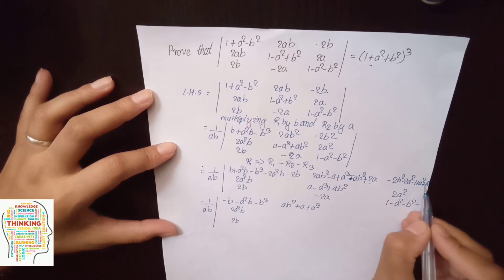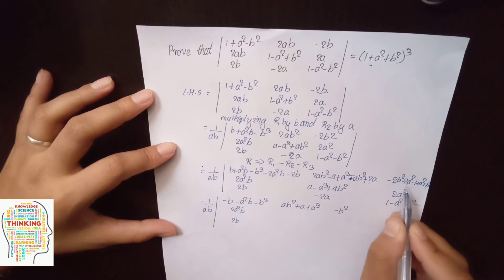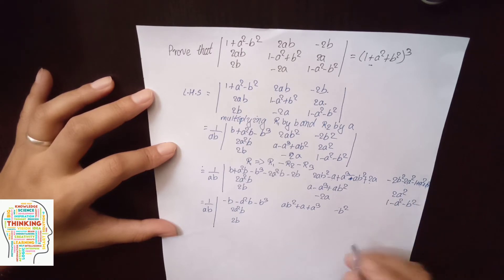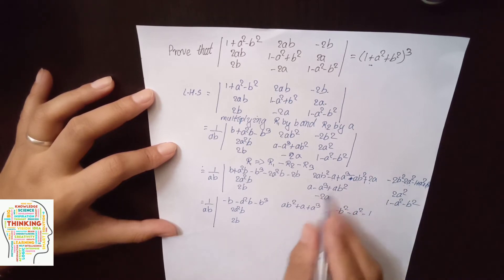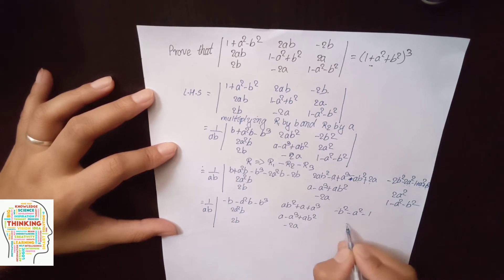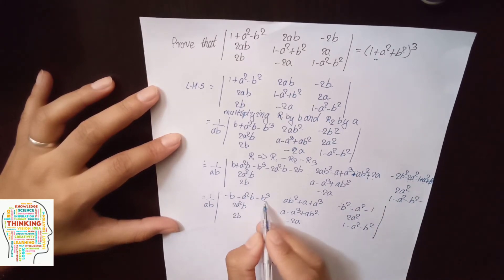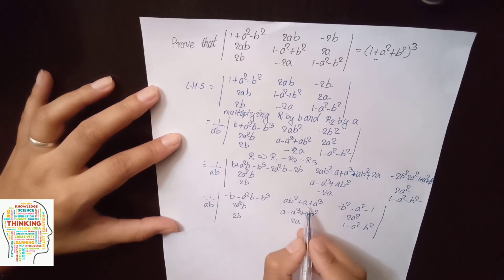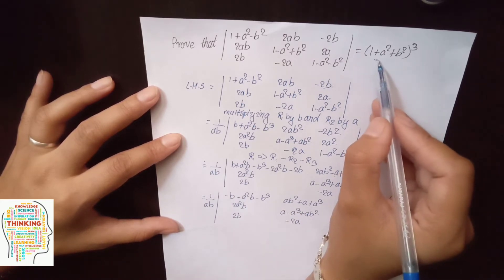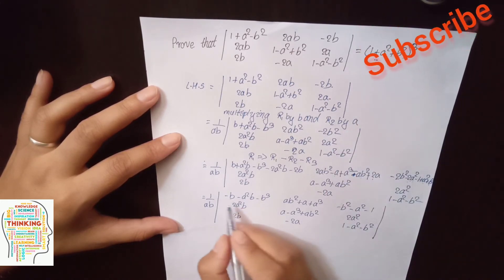2b plus b² minus 2b² and a² minus 2a² plus a² minus a² and minus 1 as it is. This is what we are doing here as it is: a² minus 2a² minus a² minus b², plus a² minus a² plus b² plus 1 plus a² plus b².